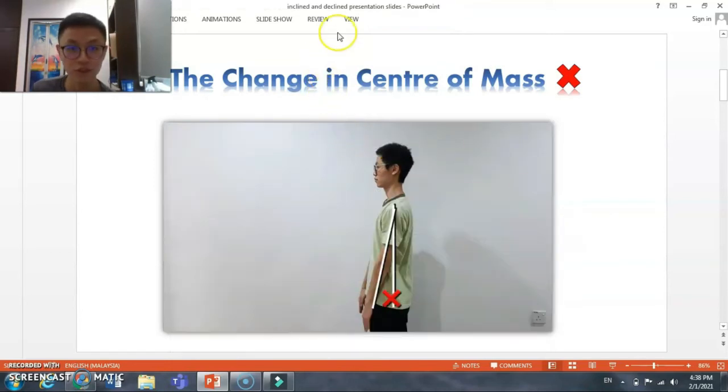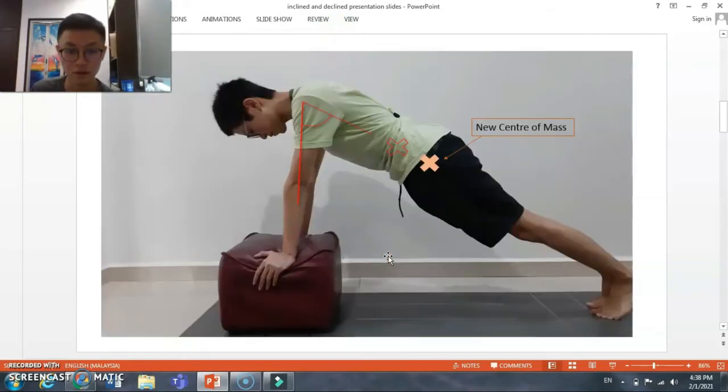From this video, we could see that when the arm angle increases, the center of mass will move upwards. During the incline push-ups, the angle of arm is actually lesser compared to the normal one, so the center of mass will move downwards and have a new center of mass at here.